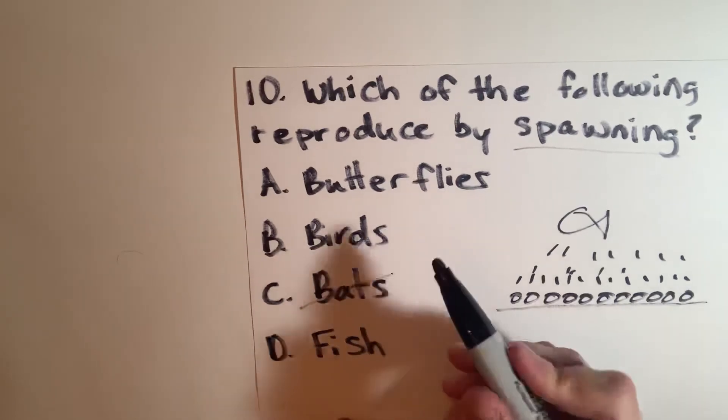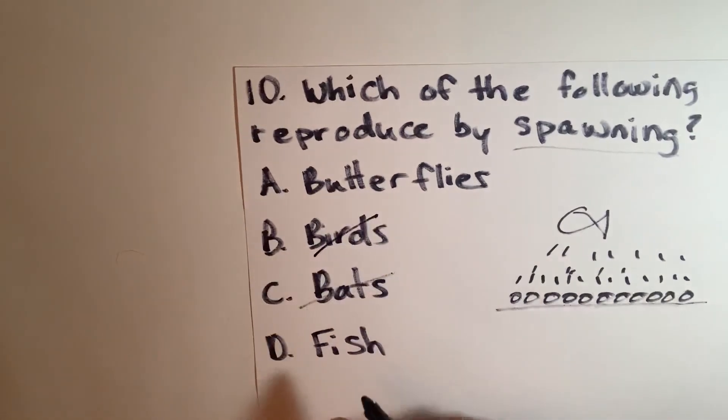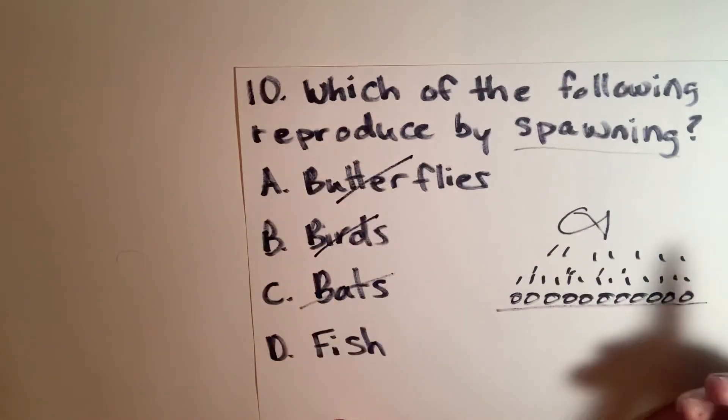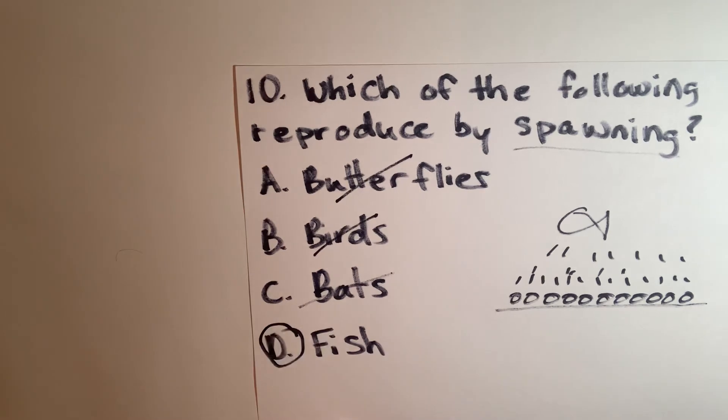Birds have actual intercourse, we can cross those off. Butterflies, caterpillars also have actual intercourse, we can cut those off. Fish are the only example that spawn.